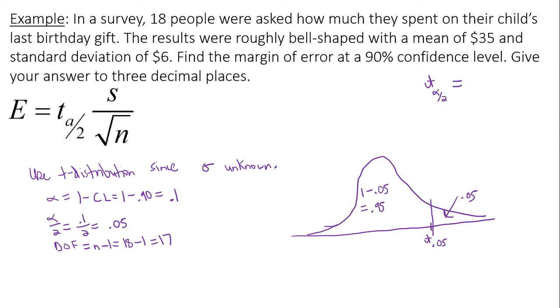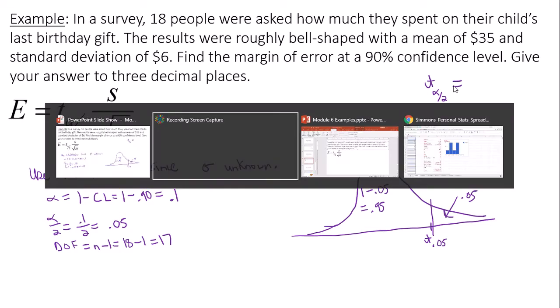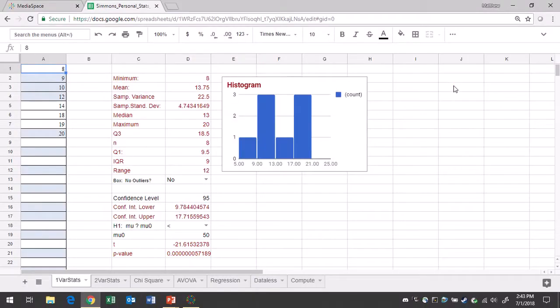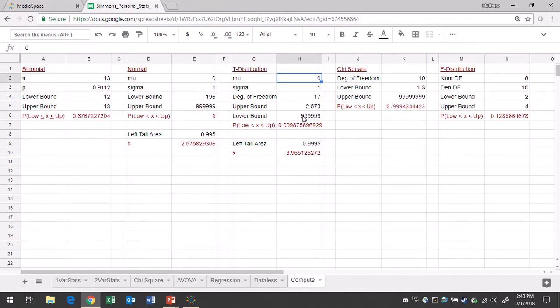Let's go to Google Sheets. When you get to Google Sheets, you will go to the compute tab. You will go to the t-distribution region. Degrees of freedom is 17, and the only other thing you need to type in is the left tail area. The left tail area in this case is 0.95.